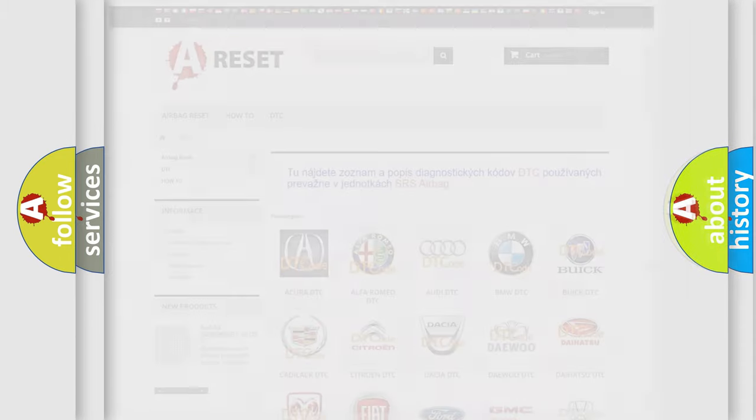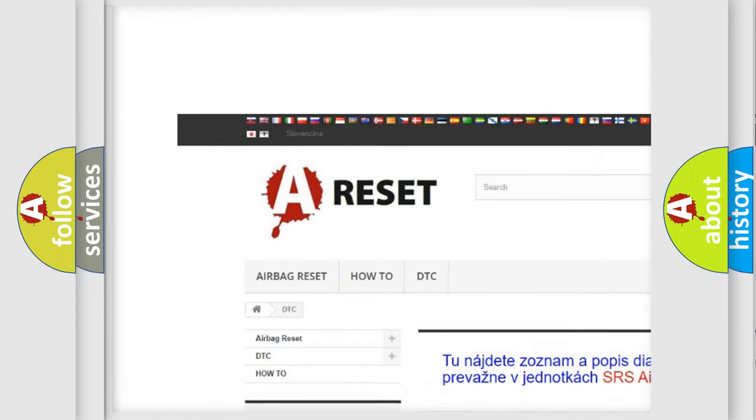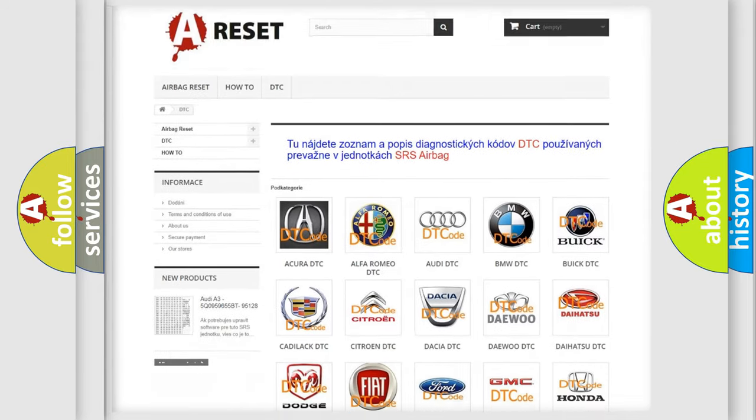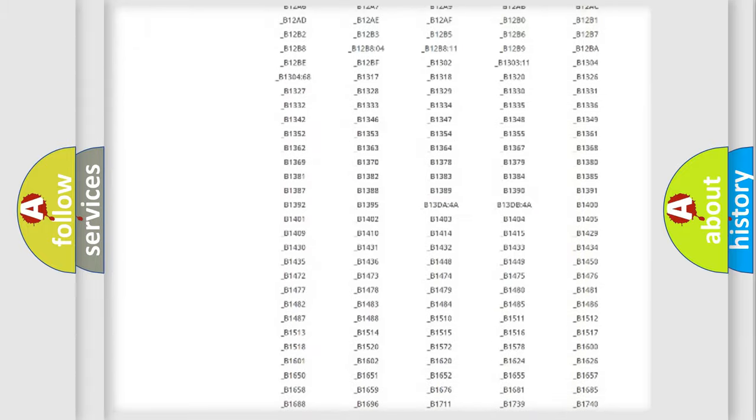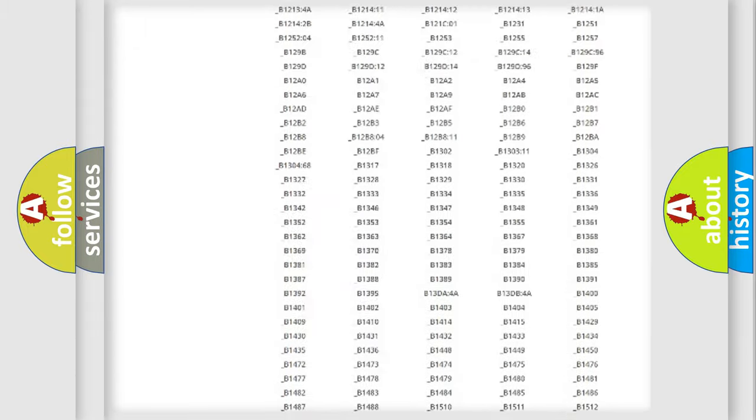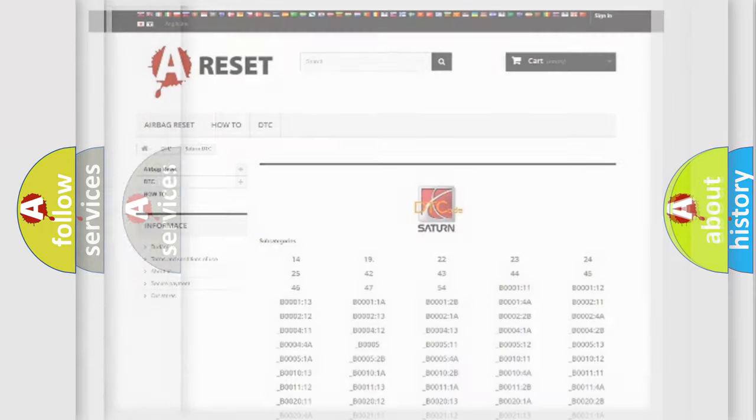Our website airbagreset.sk produces useful videos for you. You do not have to go through the OBD2 protocol anymore to know how to troubleshoot any car breakdown. You will find all the diagnostic codes that can be diagnosed in Saturn vehicles, and also many other useful things.